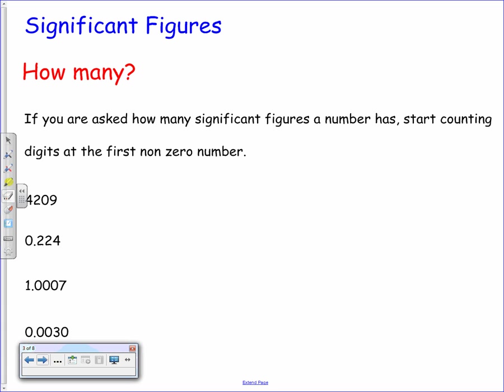So, starting off with significant figures. Remember, significant figures are digits of a number that give us an idea about the quantity or the accuracy of the number. To find how many significant figures a number has, all we need to do is start counting at the first non-zero digit. So if we look at the first example, we have 4209 — it has four digits and the first digit is a four, so that gives it four significant figures.